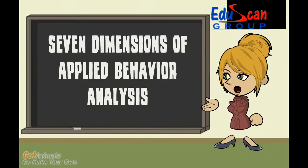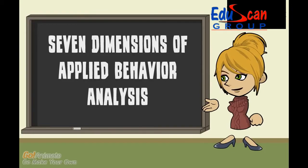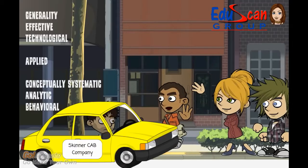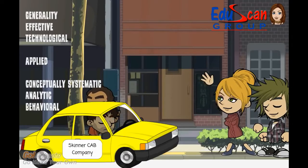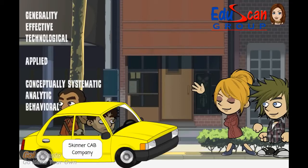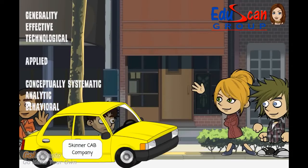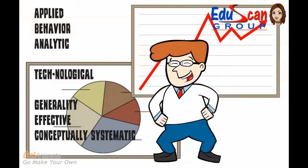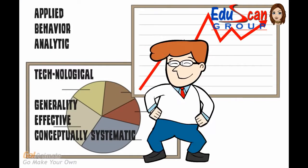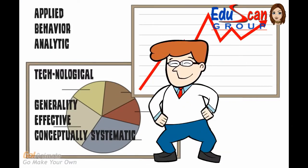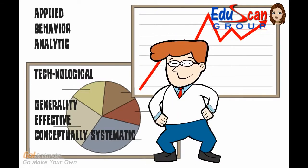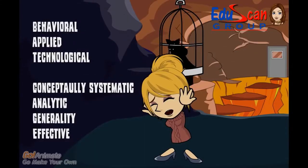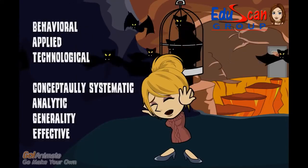Seven dimensions of applied behavior analysis, ABA. One easy way for remembering the seven dimensions is an acronym: GET A CAP, which stands for Generality, Effective, Technological, Applied, Conceptually systematic, Analytic, and Behavioral. Another acronym you could use is ABA TECH CHECK, which stands for Applied, Behavior, Analytic, Technological, Effective, Conceptually systematic, and Historically consistent.